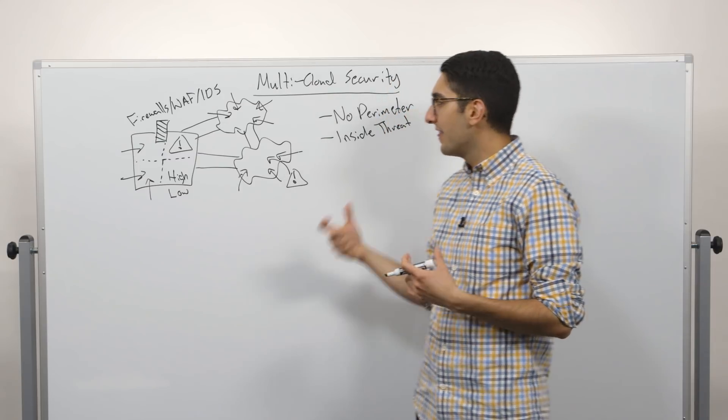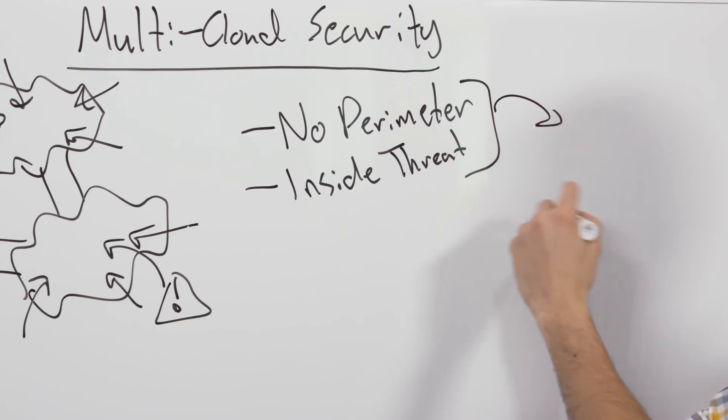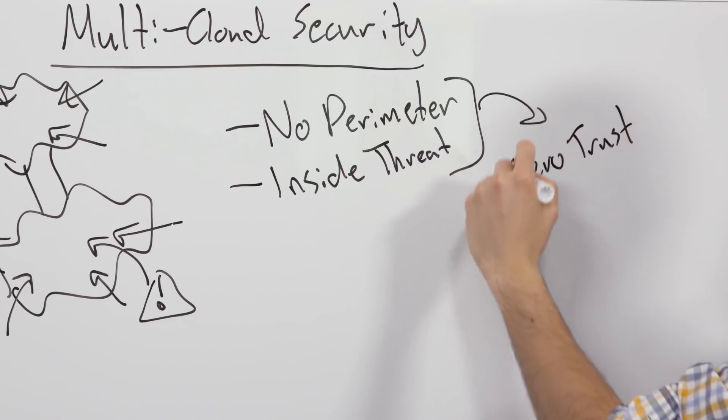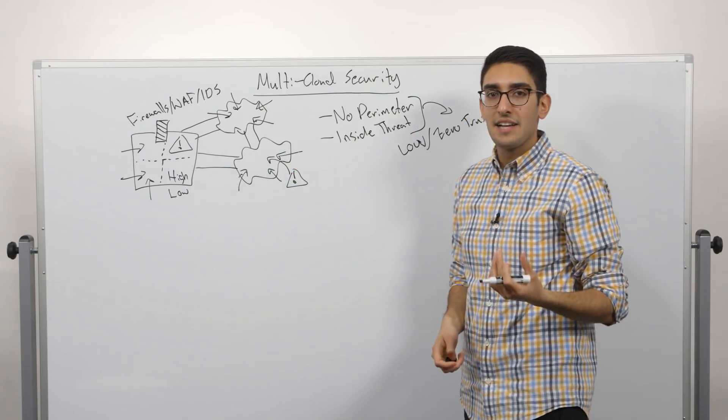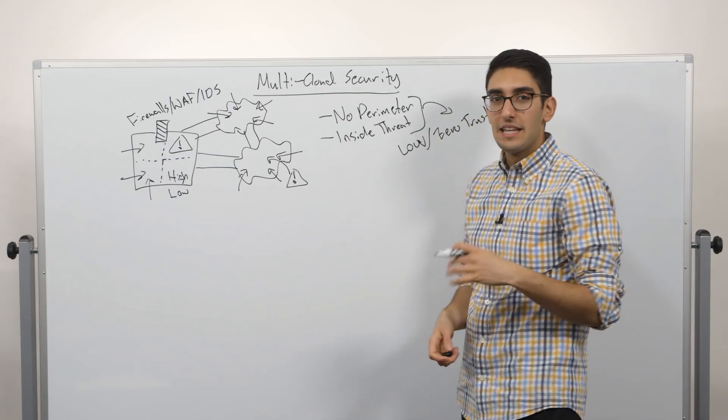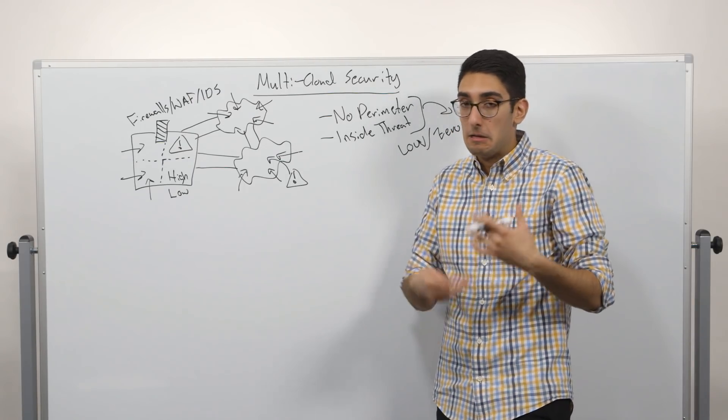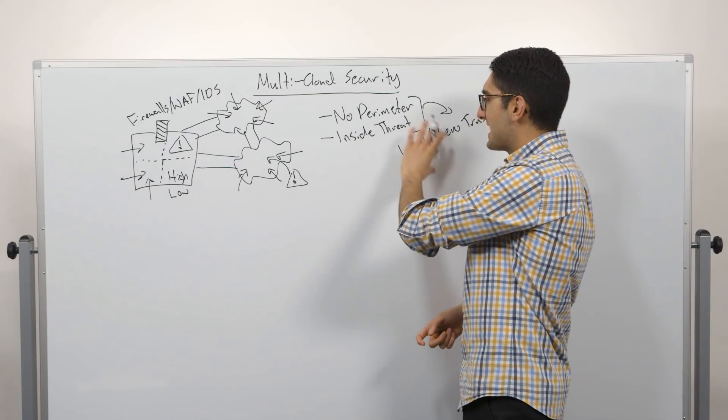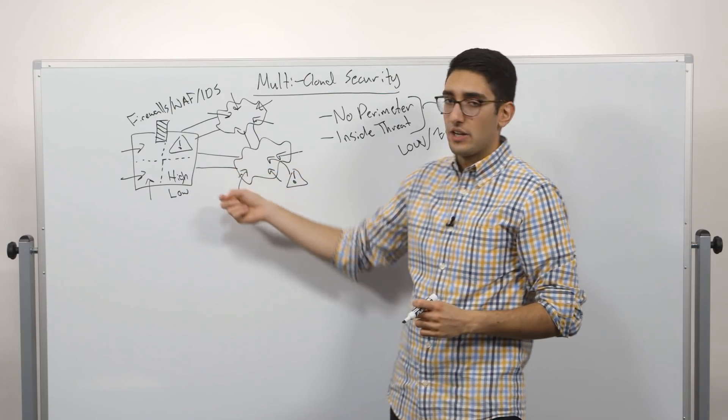So as we start to look at these types of challenges, what we see is an emerging philosophy of what we call zero trust or low trust networking. And so what it means is instead of saying being on our network implies some level of access, implies some level of trust, what we're really saying is this implies little to no access to systems. By virtue of being on my network, you can't actually access anything in addition to someone who's on the outside of the network. So once we start to take this approach, this sort of philosophy to security, what starts to change over here?